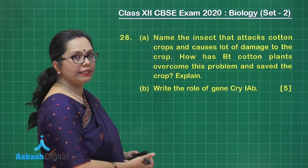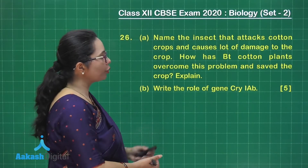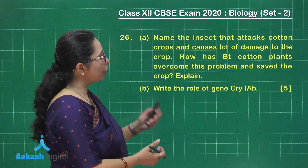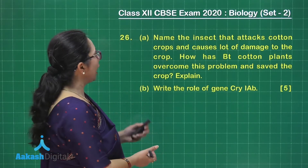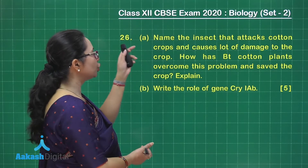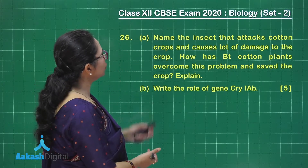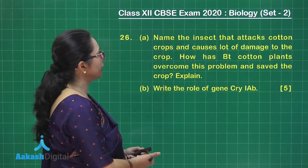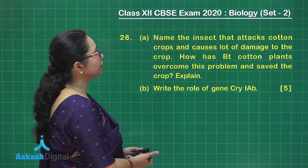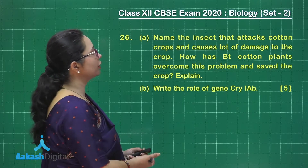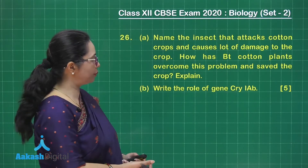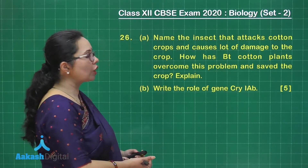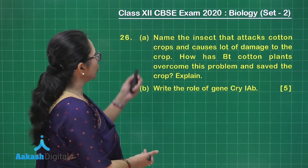Taking up question number 26 now — this is a 5-mark question and all 5-mark questions have internal choice. This is the first alternate and it has two parts, A and B. Part A asks: name the insect that attacks cotton crops and causes lot of damage, and how has BT cotton overcome this problem. Part B asks: write the role of the gene cry 1AB.